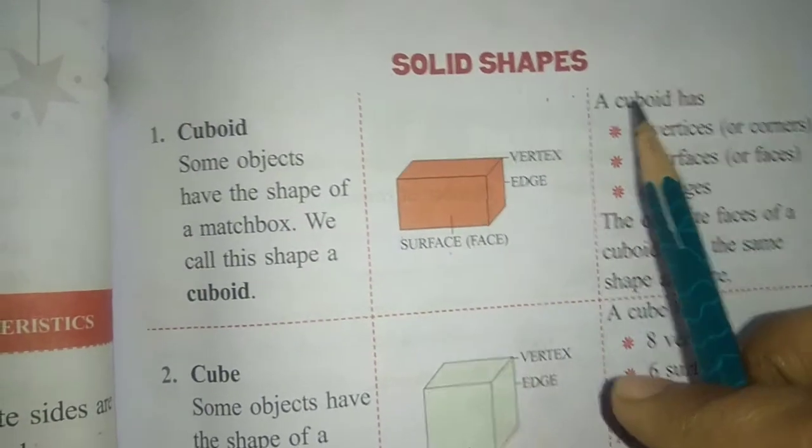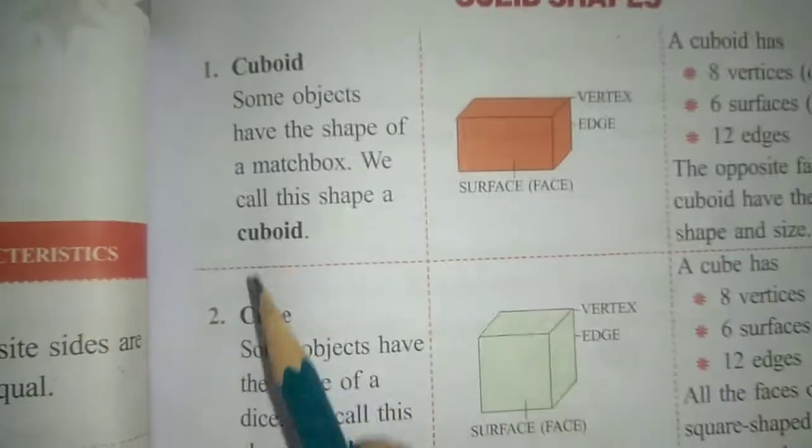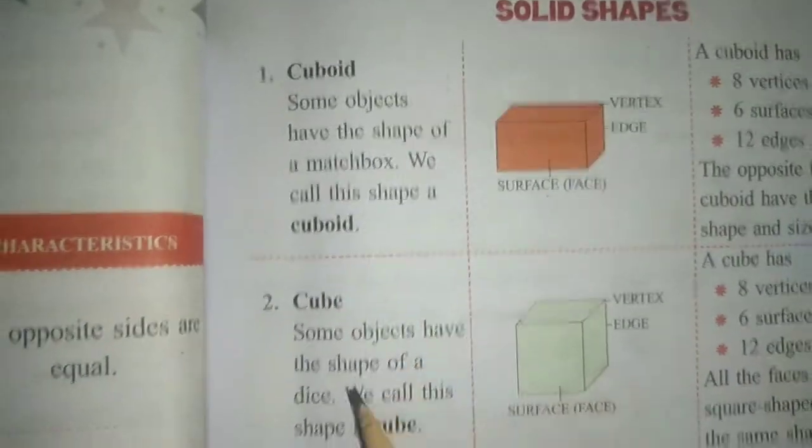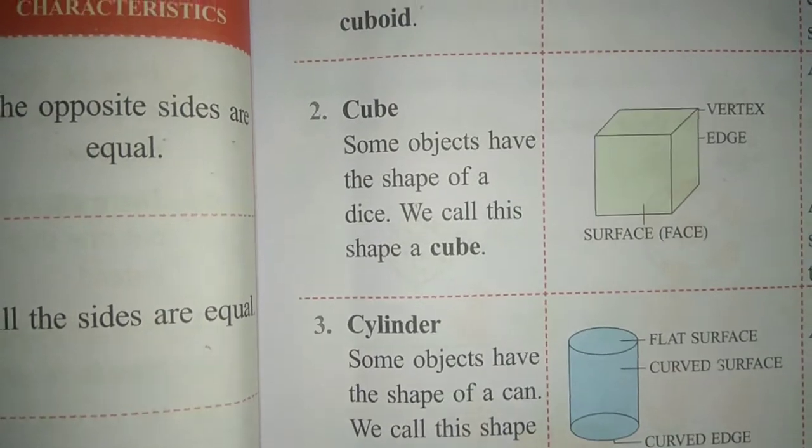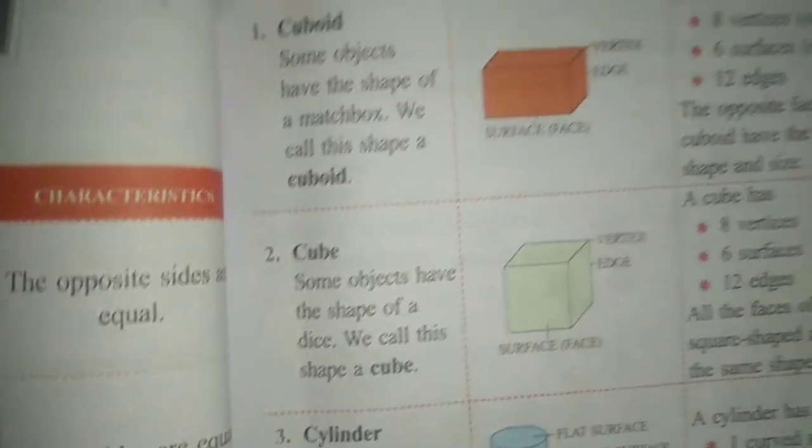Solid shapes mein hamare kaun kaun se hote hain? Cuboid, cube, cylinder, cone, and sphere.